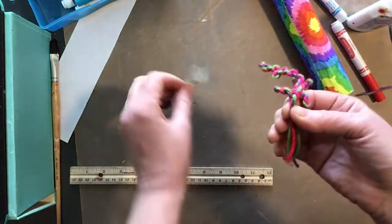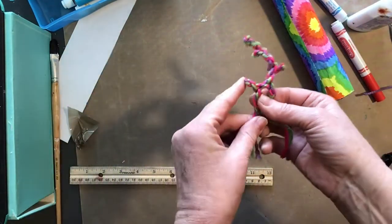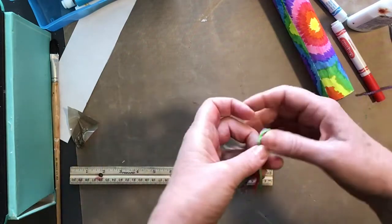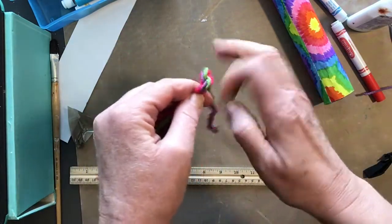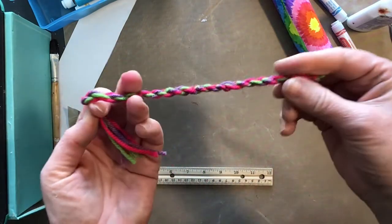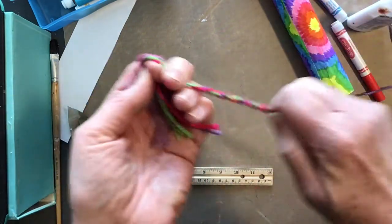When that's twisted pretty tight, then you just fold it in half. I'm going to untape it. Fold it in half. Don't let it go. And then just let it twist around itself. Now you get this really cool looking rope.